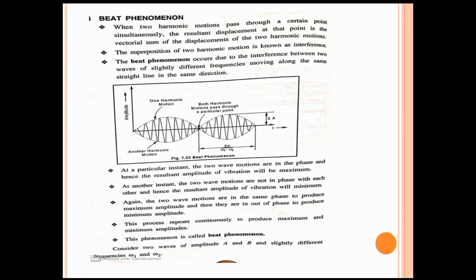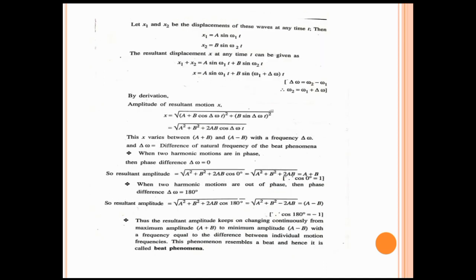Consider two waves of amplitude A and B and slightly different frequencies ω₁ and ω₂. Let x₁ and x₂ be the displacements of these waves at any time t. Then x₁ = A sin(ω₁t) and x₂ = B sin(ω₂t). The resultant displacement x at any time t is: x = x₁ + x₂ = A sin(ω₁t) + B sin(ω₂t), which can be written as A sin(ω₁t) + B sin(ω₁t + Δω·t), where ω₂ = ω₁ + Δω.